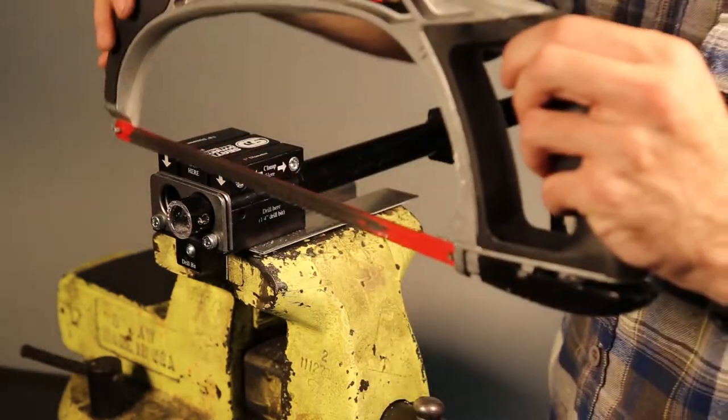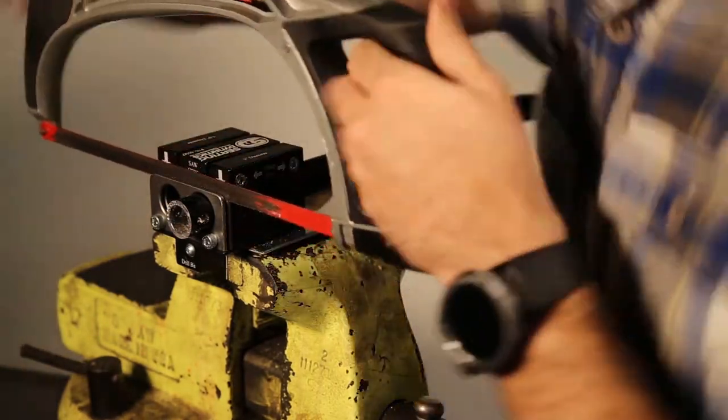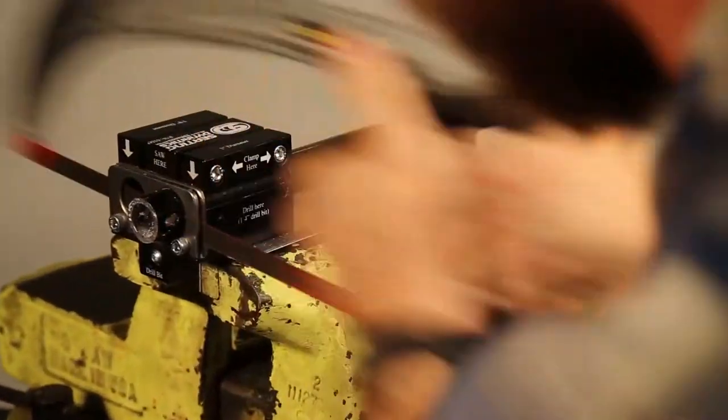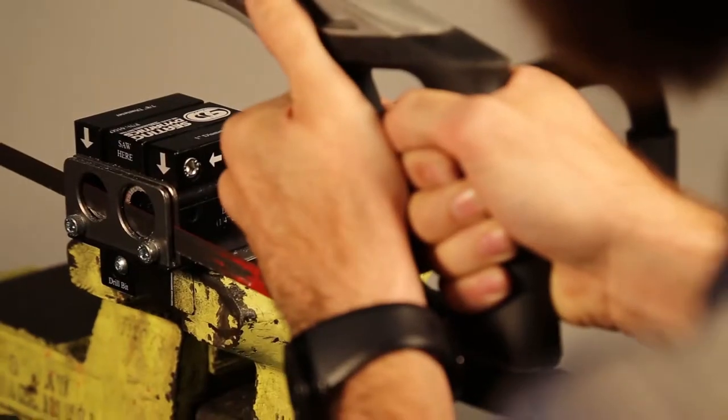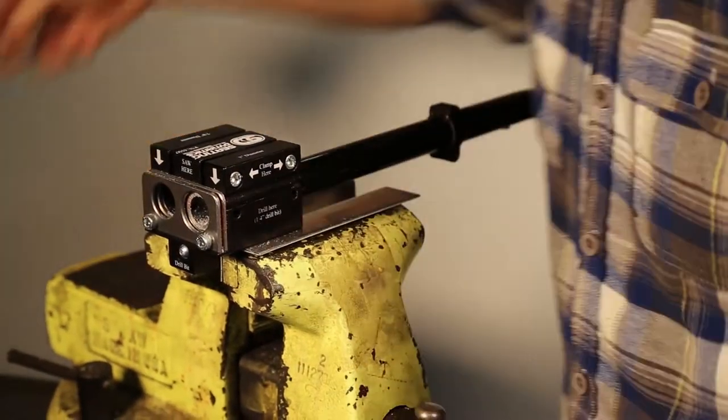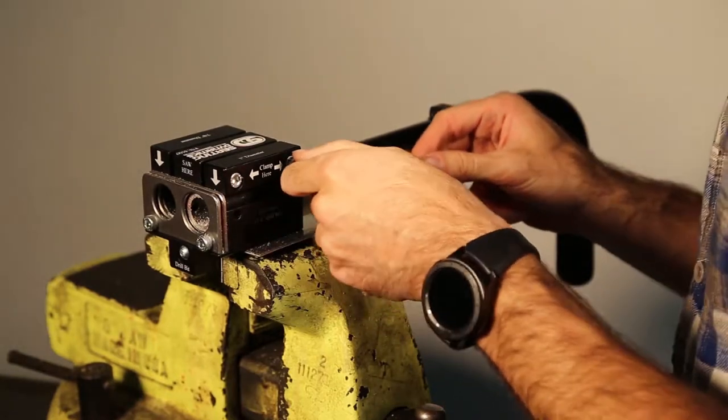Use the hacksaw to cut the back canes to length. Don't loosen the clamp yet.